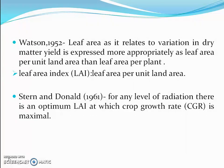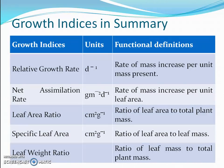Another scientist, Stern and Denald in 1961, said that for any level of radiation there is an optimum leaf area index at which crop growth rate is maximum. A leaf area index above the maximum will cause shading of the lower leaves of the canopy, while below the maximum, available light is not intercepted completely by the canopy and the canopy will not operate at its full potential.